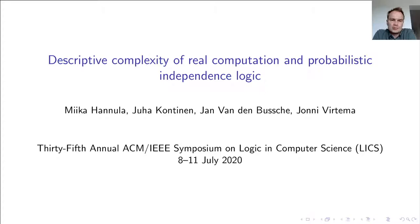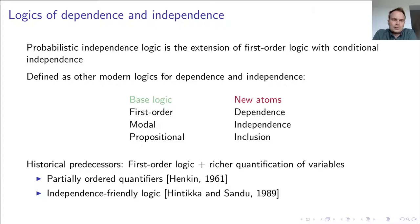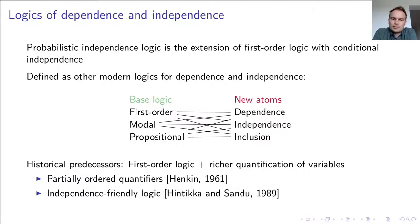The logic that we studied in this paper is part of the growing family of modern logics of dependence and independence. The point here is to take some base logic such as first-order logic and combine it with some collection of modular dependency atoms that describe elementary dependence relations between first-order variables. The objective is to extend the expressivity of classical logics in order to analyze and reason about complex dependence phenomena in diverse fields.